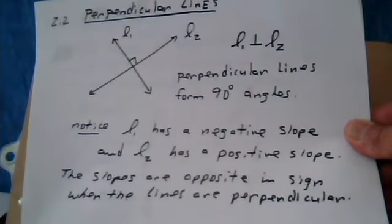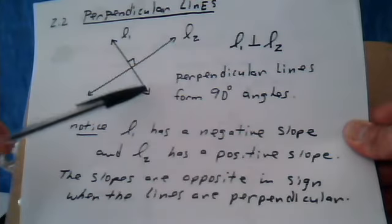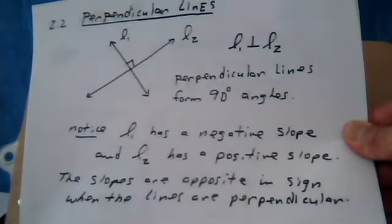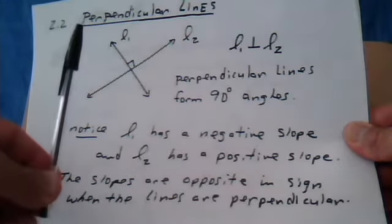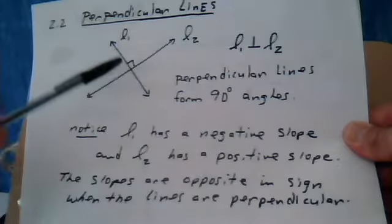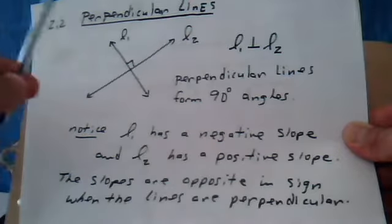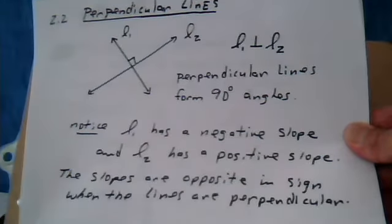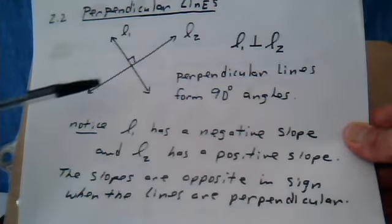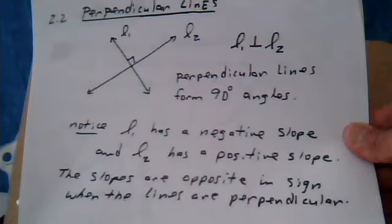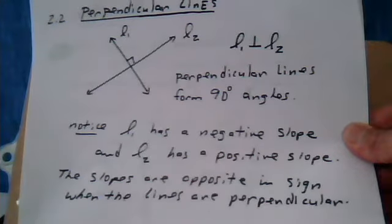Now notice that line 1 is coming down and line 2 is going up. That always is the case when you have perpendicular lines. And also remember that you read graphs from left to right. So this one's coming down. This one's going up from left to right. This one has a negative slope. This line has a positive slope. So perpendicular lines have slopes with a different sign.